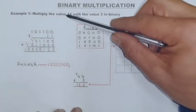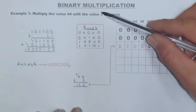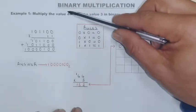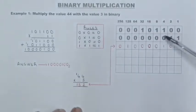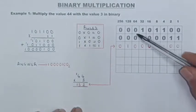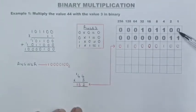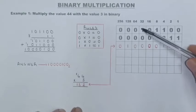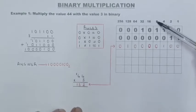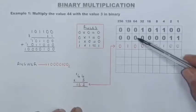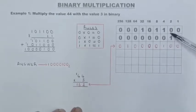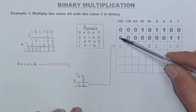The first example is 44 multiplied by 3. What I do first is take 44 and 3 and put them into the code system like I have here. We can see that the binary number 44 is 32 plus 8 plus 4, and the rest of the values will be zeros. Same with 3 — I'm going to use 2 and 1, and the rest will be zeros.